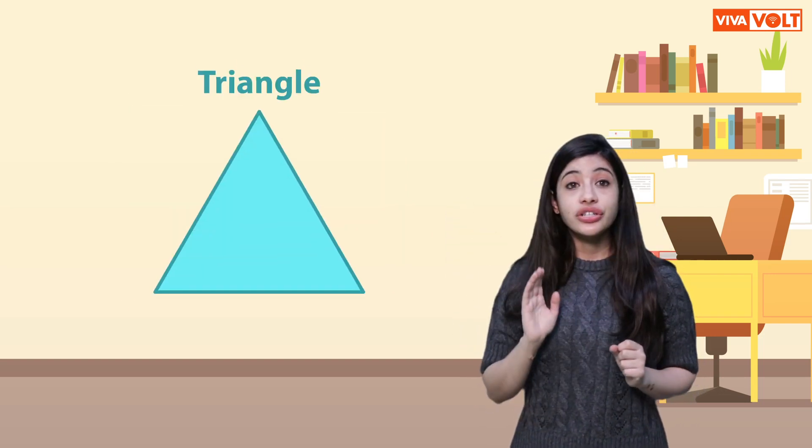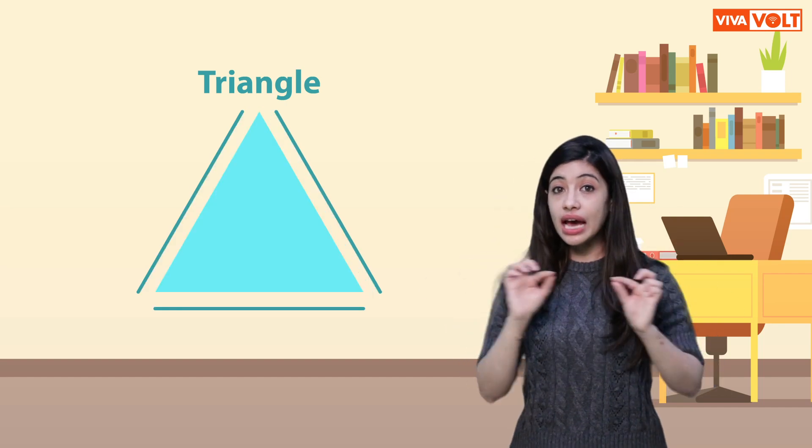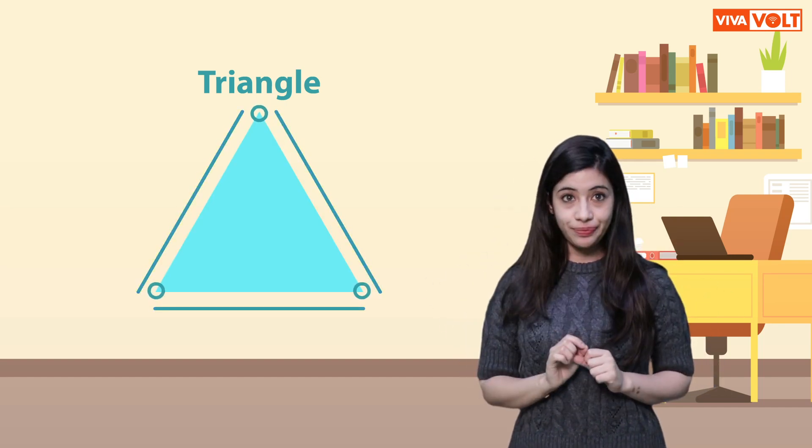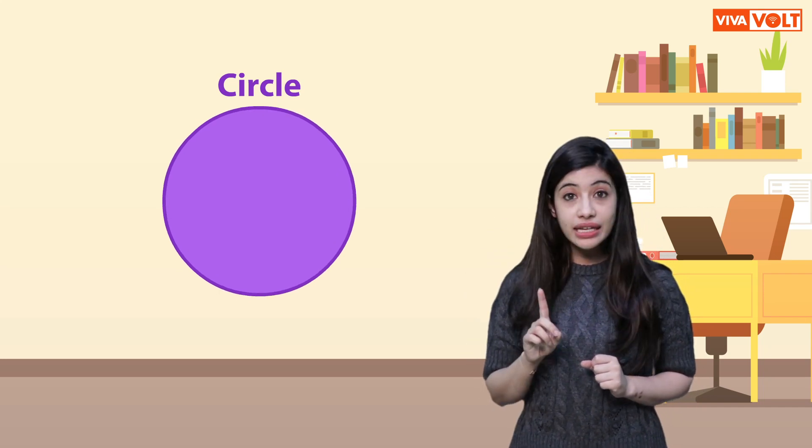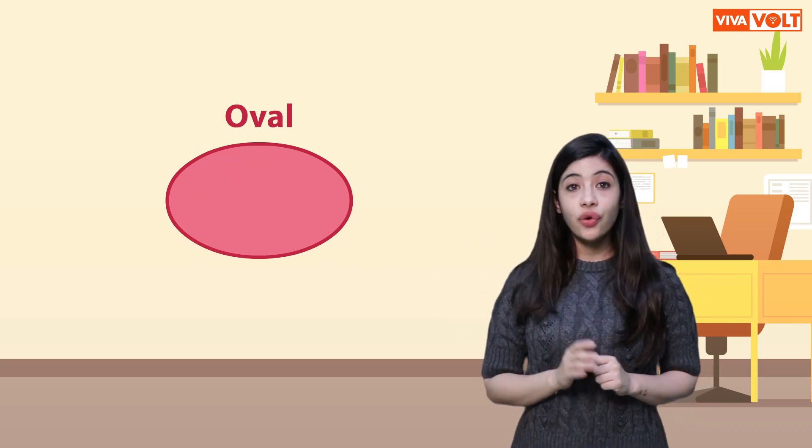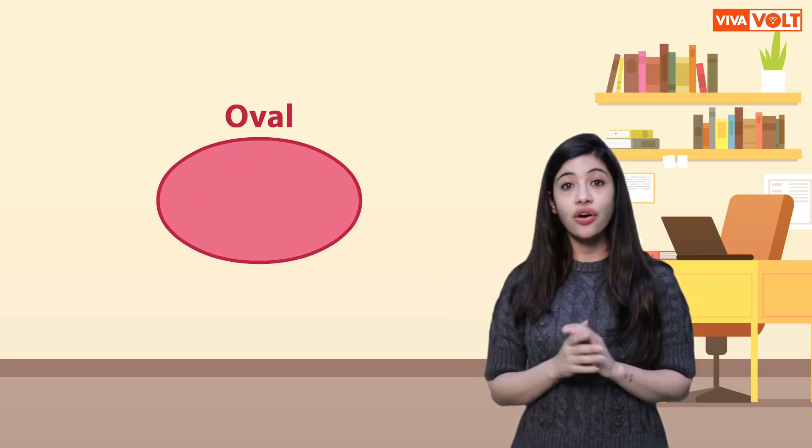Triangle. A triangle has 3 sides and 3 corners. Circle. A circle has no sides or no corners.